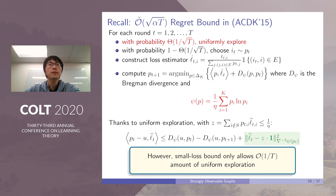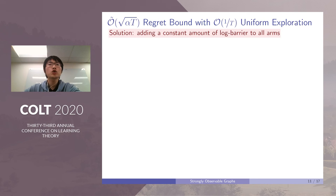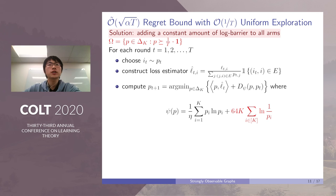However, 1/√T exploration will lead to √T regret. This is not acceptable for small-loss bounds, which only allows a 1/T amount of uniform exploration.